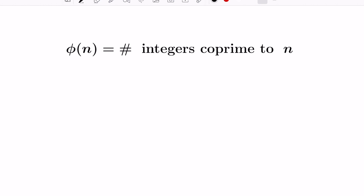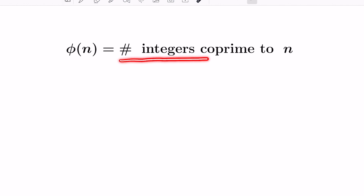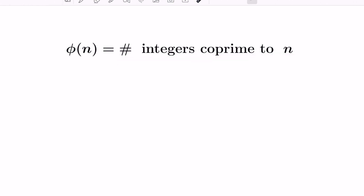In today's video, we're going to talk about Euler's totient function, which is denoted by phi. It's a function defined on positive integers: for a positive integer n, it's the number of integers co-prime with n, meaning the number of integers that have no common factors with n except for 1.